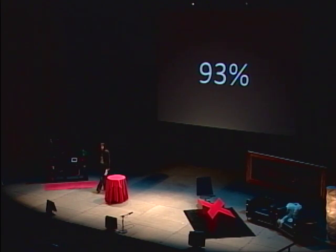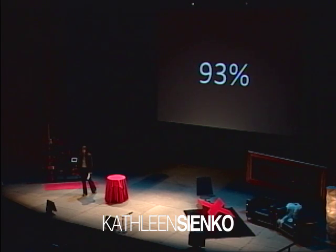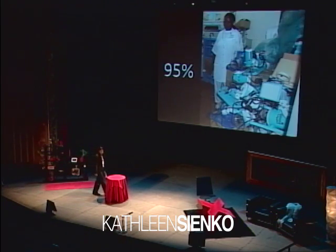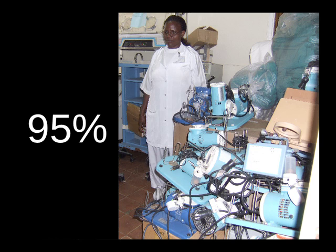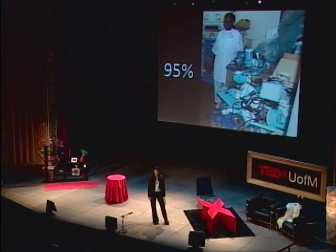Developing countries bear 93% of the worldwide burden of disease. Over 95% of medical equipment used in developing countries are imported, and there is virtually no local production of medical equipment in these settings. The World Health Organization estimates that 7 out of 10 devices designed for use in a developed setting don't work upon arrival in a developing world setting. This is primarily due to a lack of spare parts, a lack of consumables such as fluids or supplies used to maintain the equipment, and also a lack of trained technical staff.